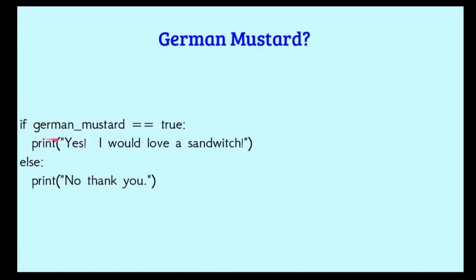So this is how we would write it in GDScript. If German mustard equals true, we could also just say if German mustard. If German mustard equals true, print yes, I would love a sandwich. Else, print no, thank you.